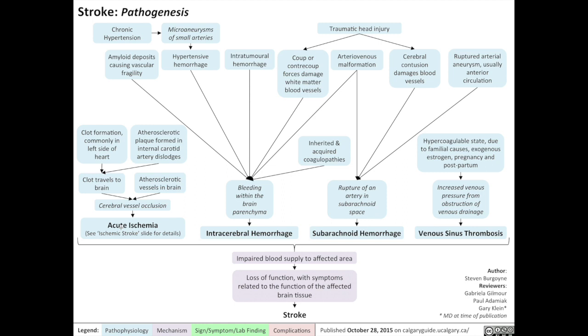As I said already, there are four main types of stroke. There's acute ischemic stroke, intracerebral hemorrhage, subarachnoid hemorrhage, and venous sinus thrombosis. Each of these different types of stroke have their own different pathogenesis.